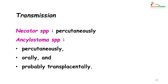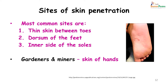Regarding transmission: Necator species are transmitted percutaneously. Ankylostoma species, besides percutaneous transmission, can also be transmitted orally and probably even transplacentally. The sites of penetration in the skin are usually the thin skin between the toes, the dorsum of the feet, and the inner side of the soles. In the case of gardeners and miners, the skin of the hands may also be a source of entry.